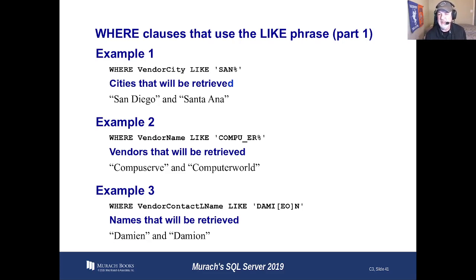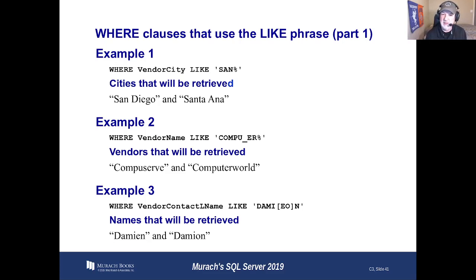This works a lot with stuff like stock numbers where there may be only one difference. Let's say all of our stock numbers are 10 digits and the fourth digit is a 4 if it's a battery. We could say we don't really care about all the rest — underscore, underscore, underscore, four, underscore, underscore, underscore, underscore up to 10. Search for that and we're going to find just the batteries.